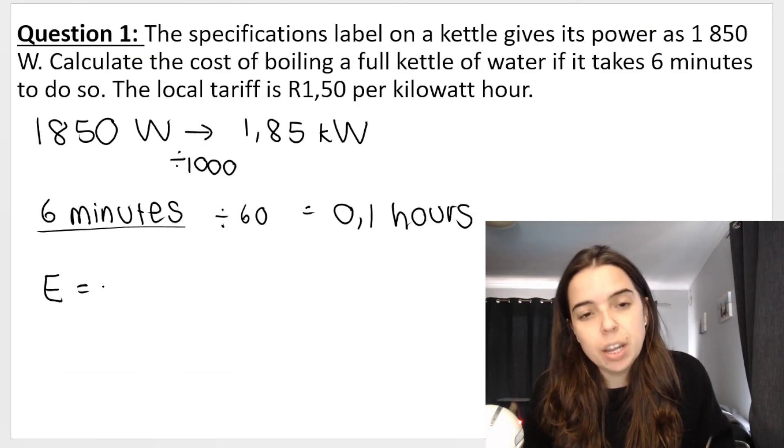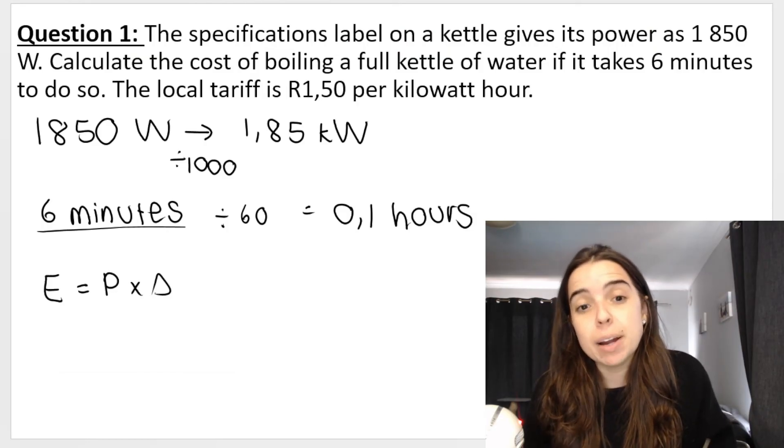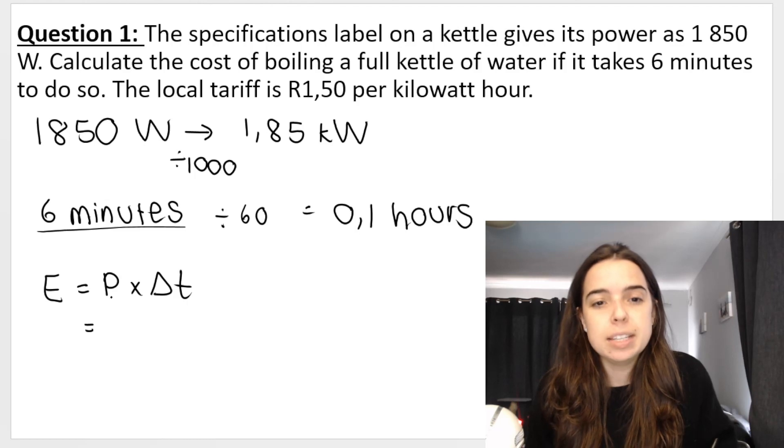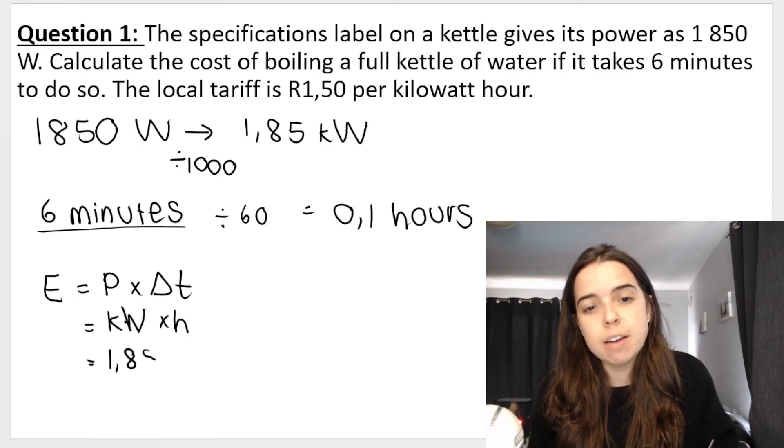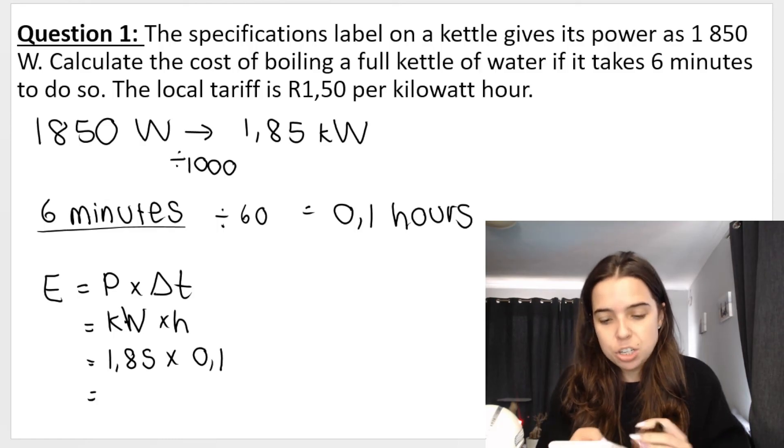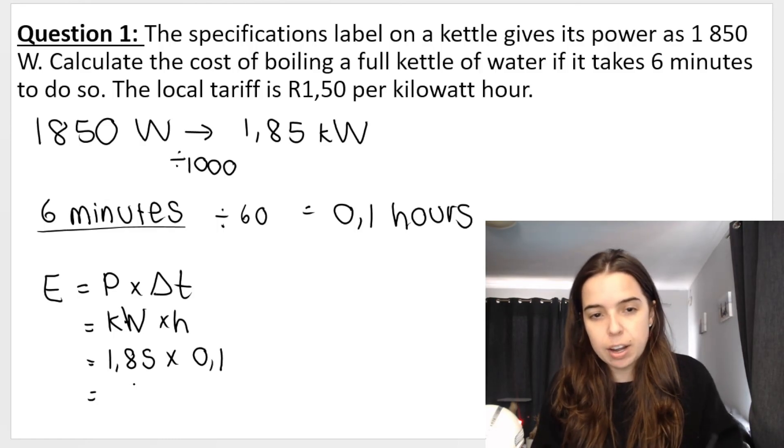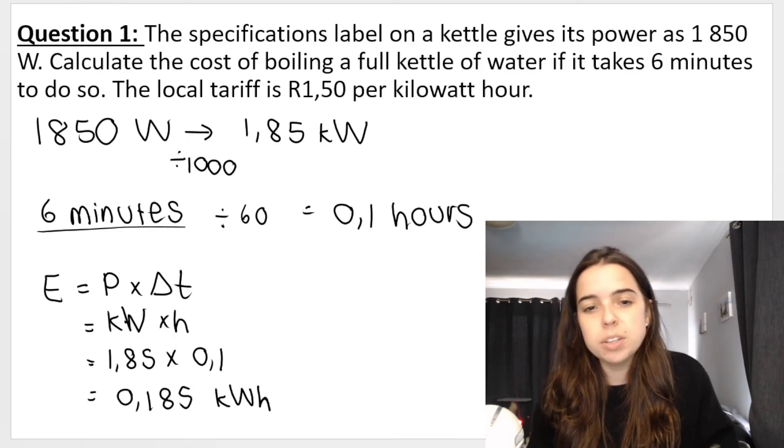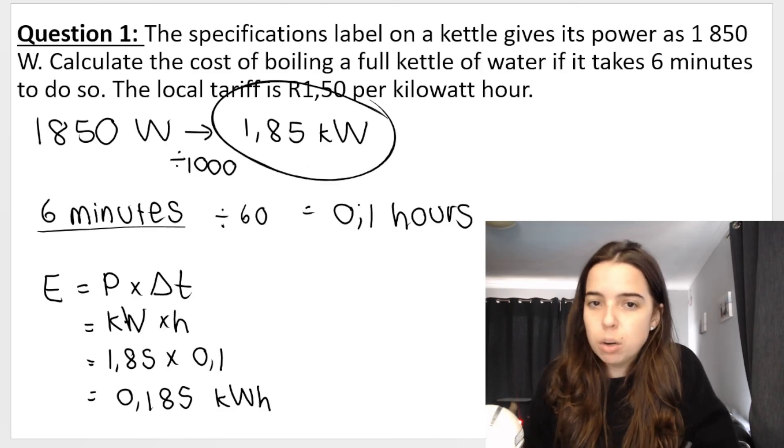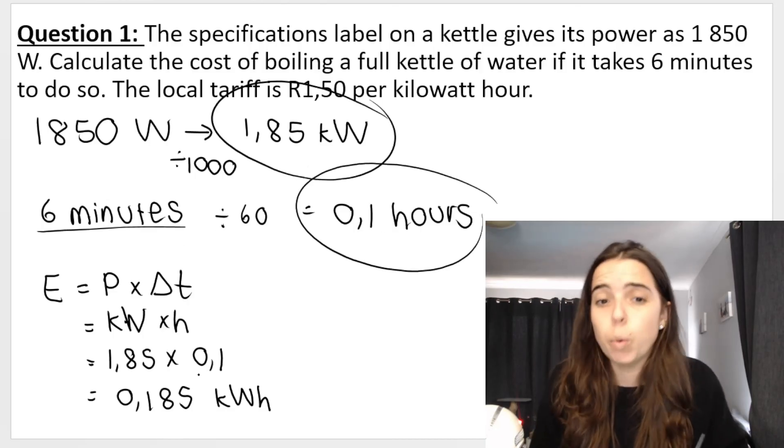Energy is power multiplied by time. The power is in kilowatts, my time is in hours. So my kilowatts is 1.85, my hours is 0.1. That gets me my energy. So 1.85 times 0.1, I get 0.185 kilowatt hours. Basically all you do is you multiply your kilowatts by your hours to get kilowatt hours.